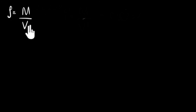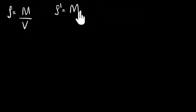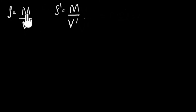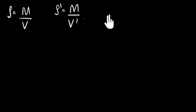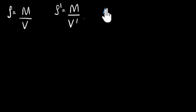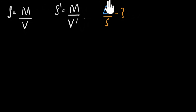We know that density rho equals mass over volume — this is the initial density with initial volume. Once we compress it, the volume changes, so the new density rho-dash equals mass divided by the new volume V-dash. Notice that the mass doesn't change, so m remains the same. Now let's figure out what delta rho over rho is — that's final density minus initial density divided by initial density.